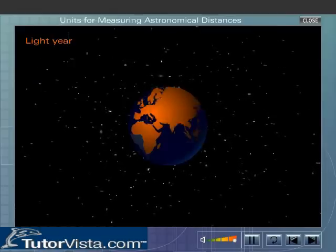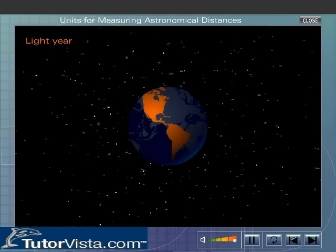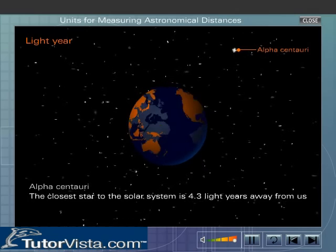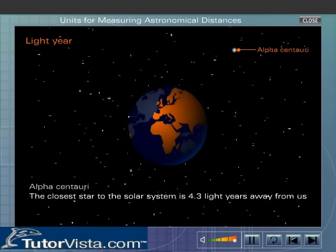Let us understand the concept of lightyear with the help of an example. Alpha Centauri, the closest star to the solar system, is 4.3 lightyears away from us.